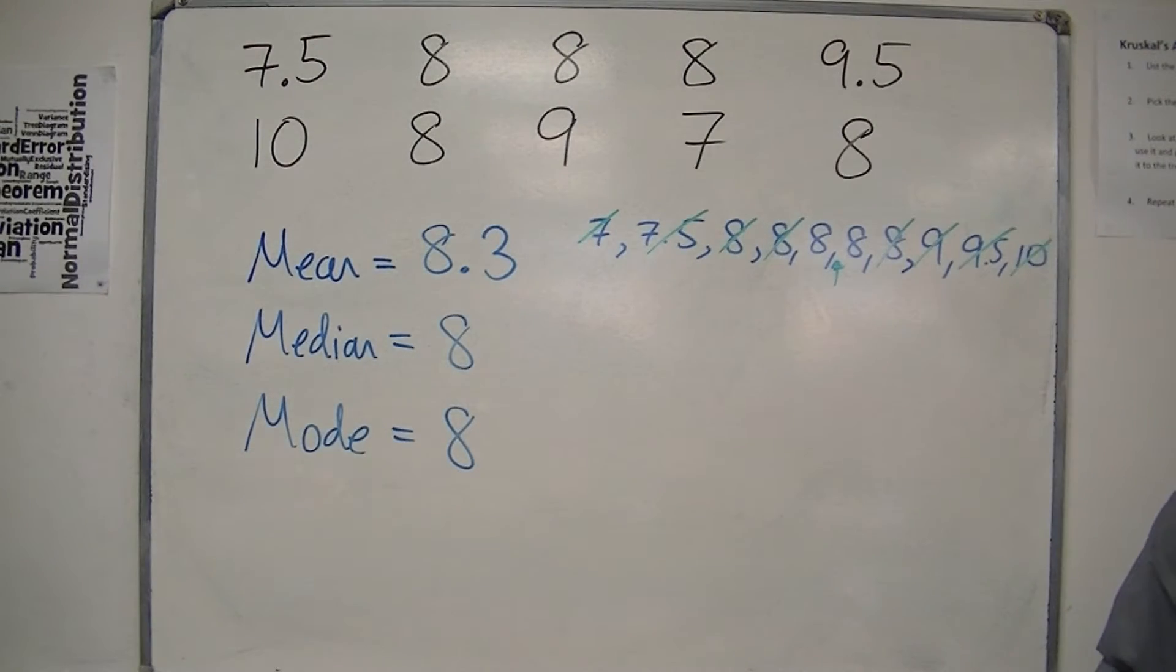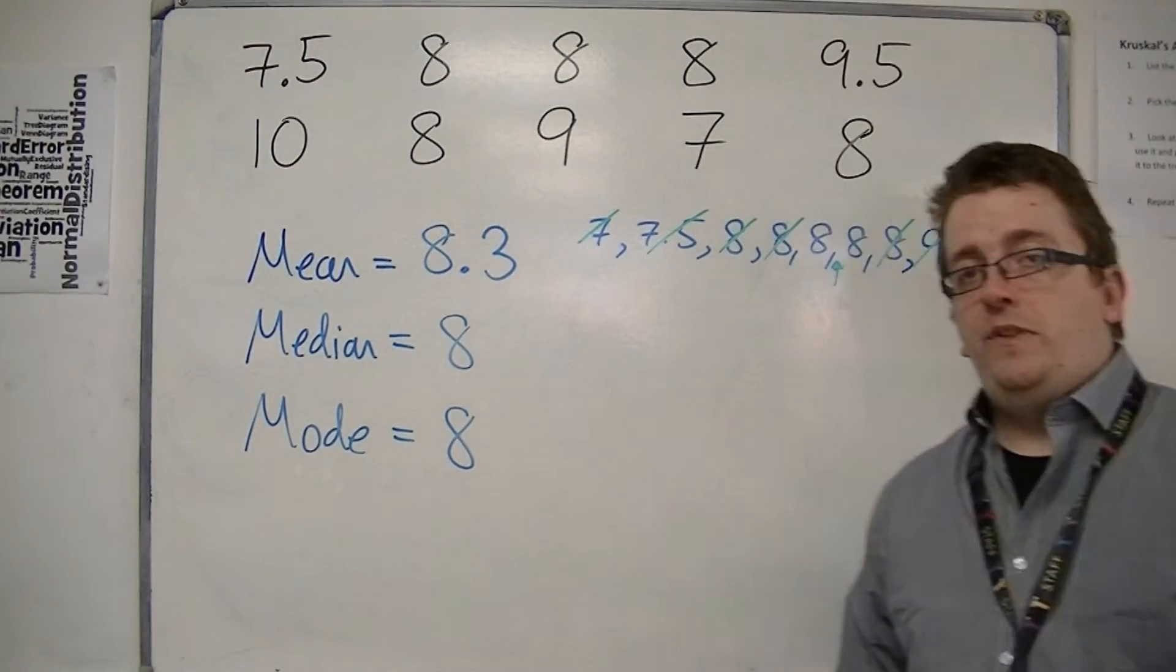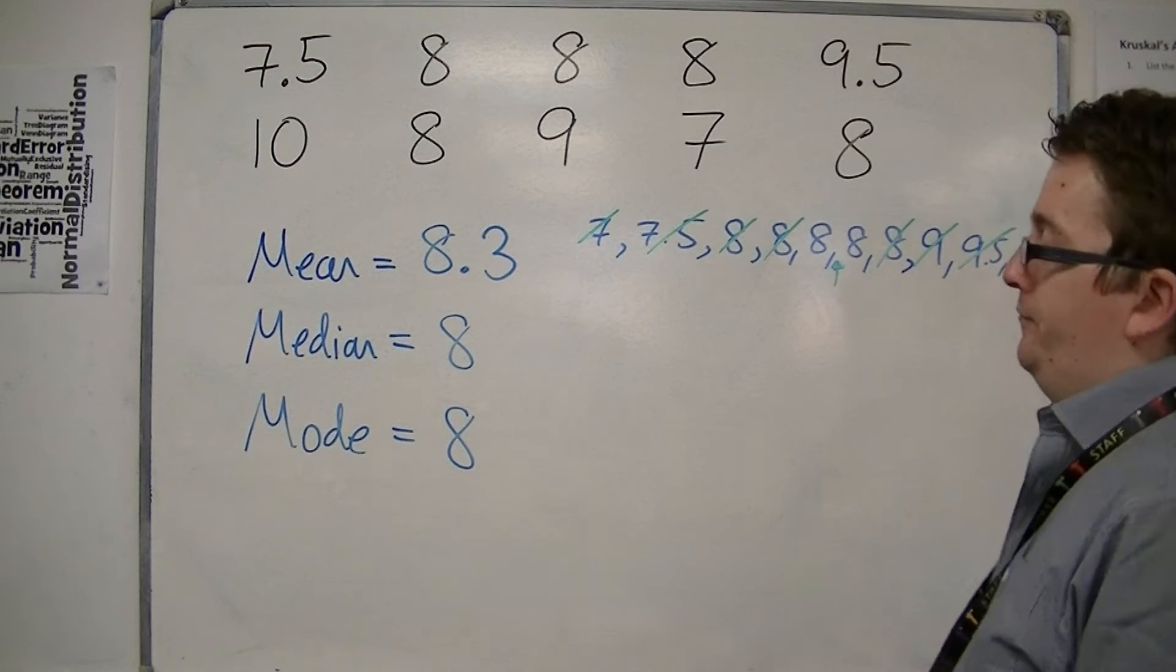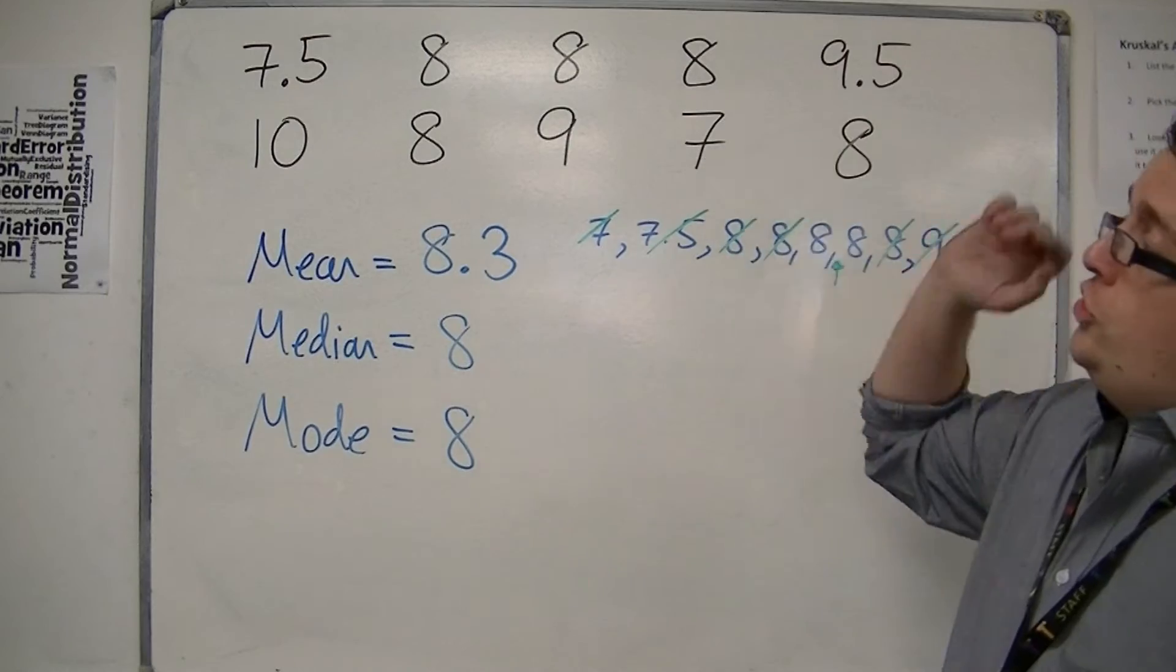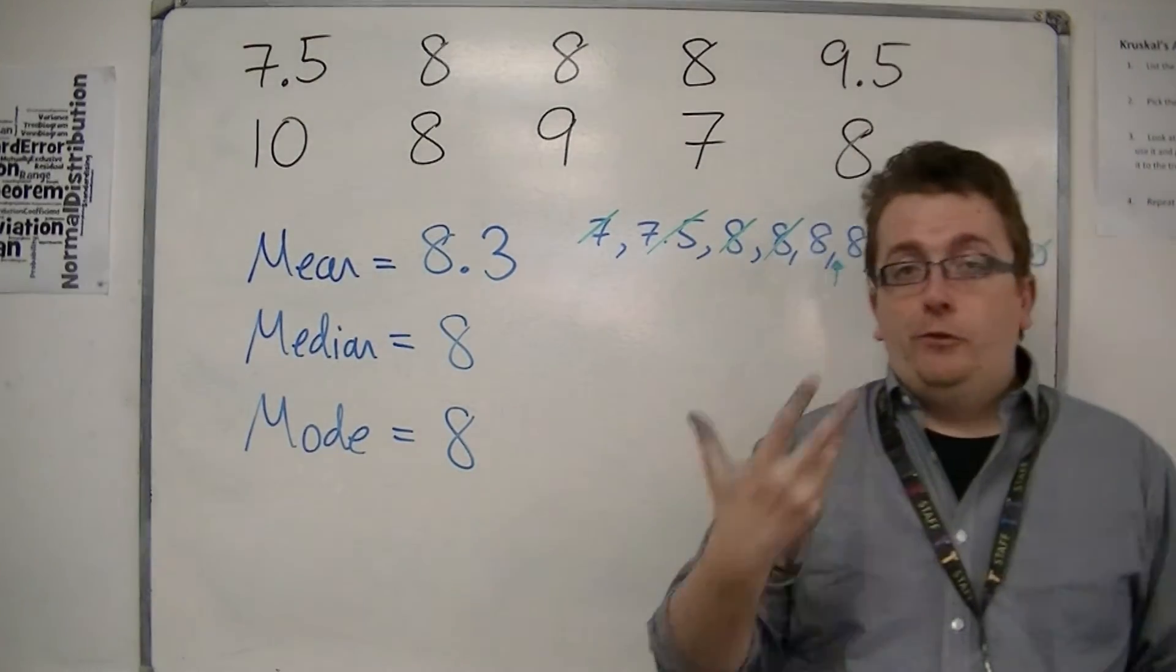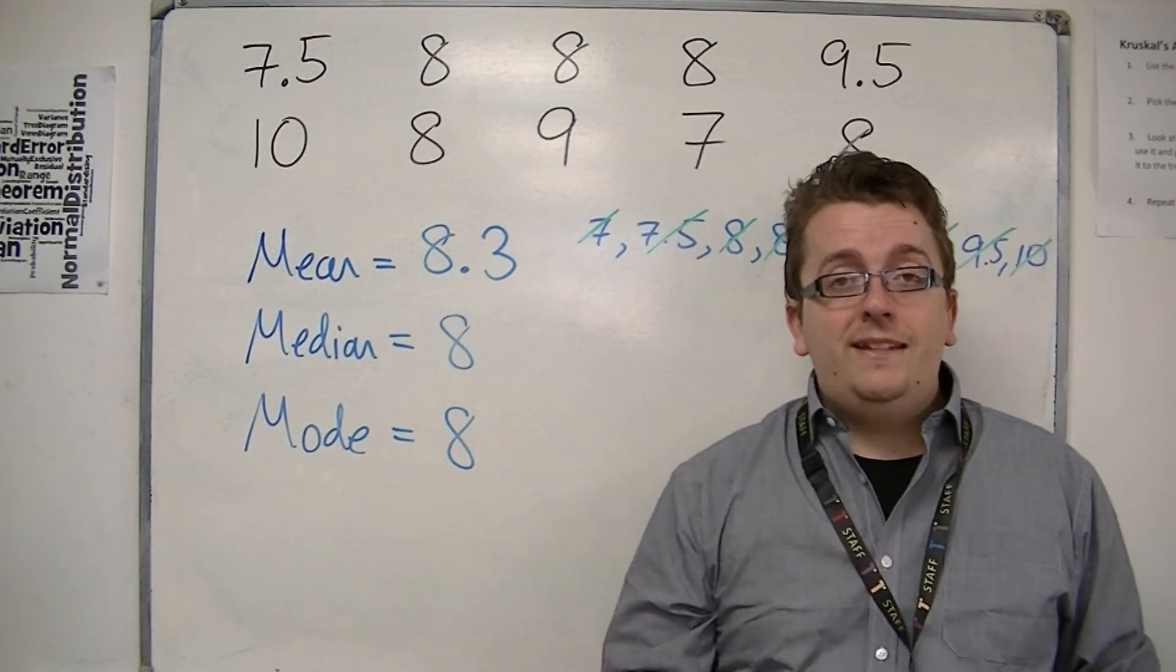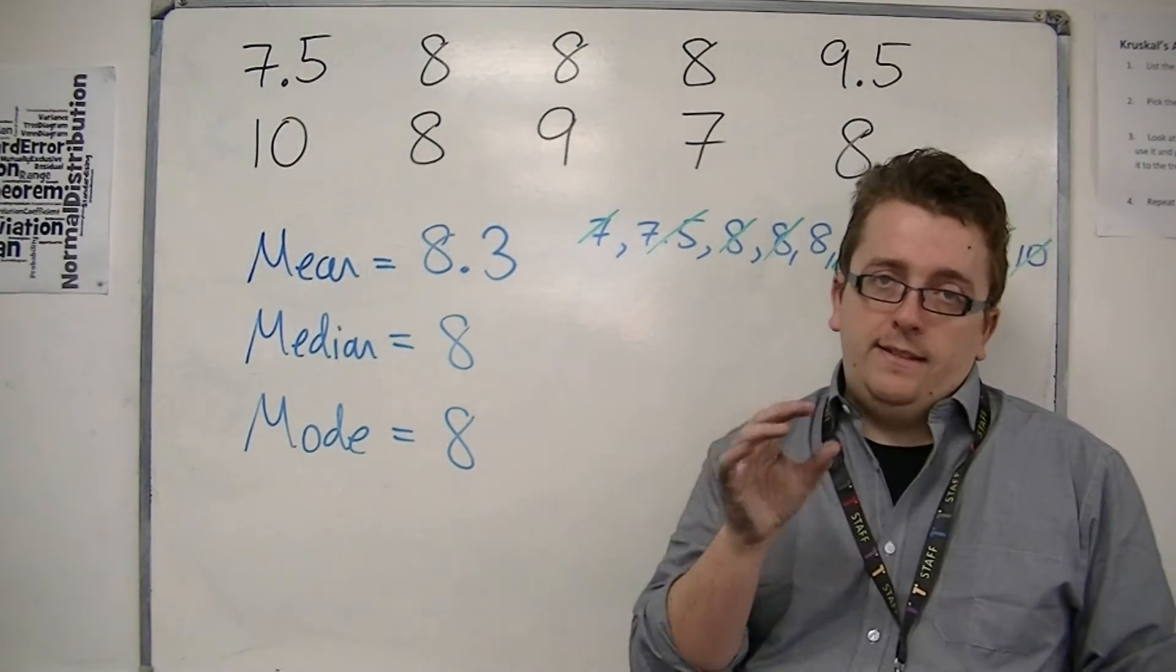Now, which one is more useful to the employer or to the shoe shop owner rather? Well, seeing shoes traditionally come in sizes, full sizes and half sizes. So you get a 7.5, you can get an 8, an 8.5, a 9. This is discrete data.